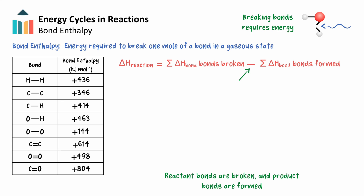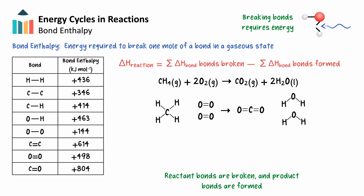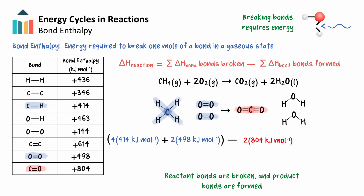Let's examine the combustion of methane and use the enthalpy data for the bonds within our reactants and products. For bond enthalpies, it's helpful to think in terms of each molecule's Lewis structure. From this and our enthalpy data, we can calculate the change in enthalpy in the reaction. We'll take the sum of the bond enthalpies for breaking 4 moles of carbon to hydrogen single bonds and 2 moles of oxygen to hydrogen single bonds. This gives an enthalpy of reaction equal to negative 808 kJ per mole.